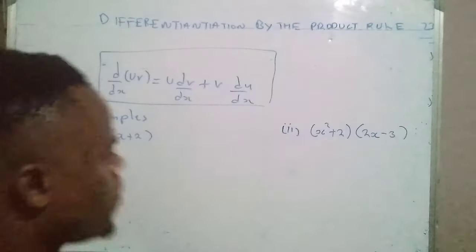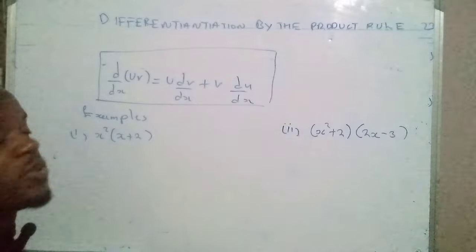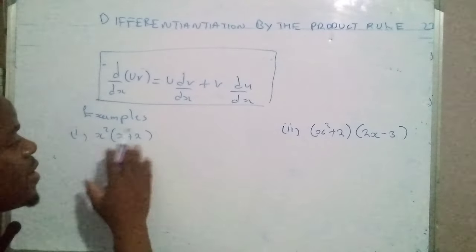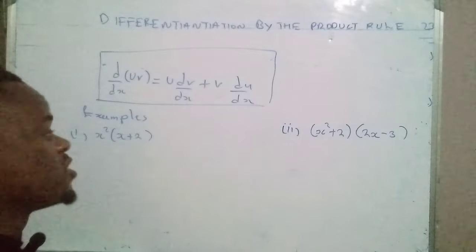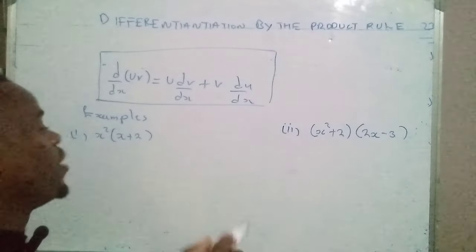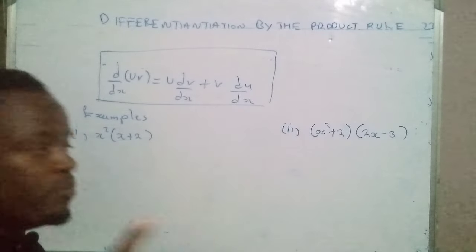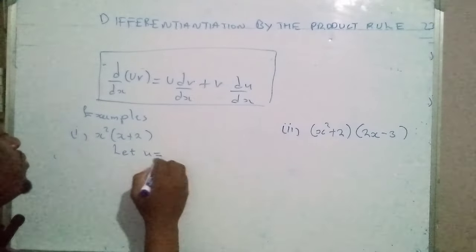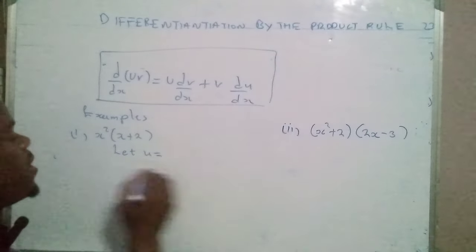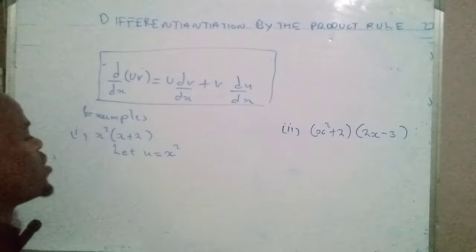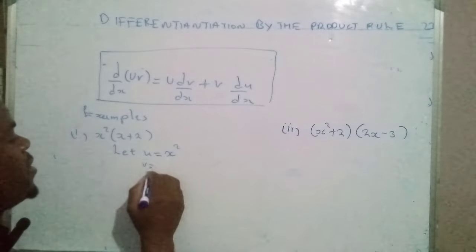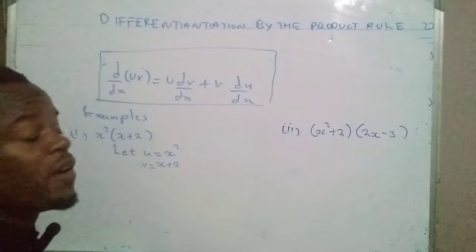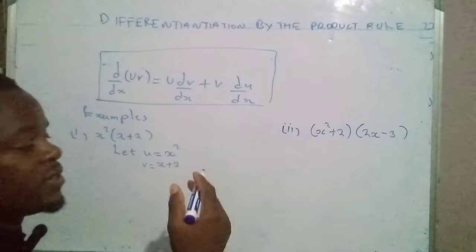The first step you have to make is when you have two functions like this: let one of the functions be u and the other one be v. So we say let u be the first function, which is x raised to the power two, and then v be x plus two.